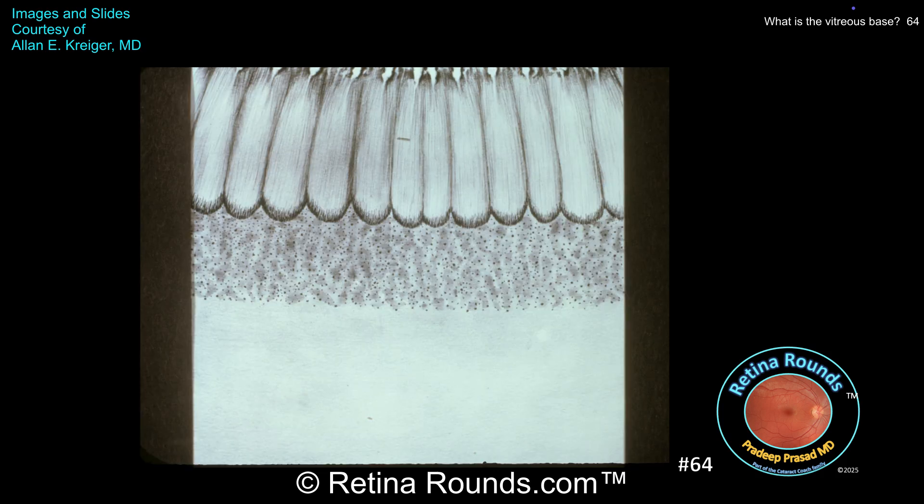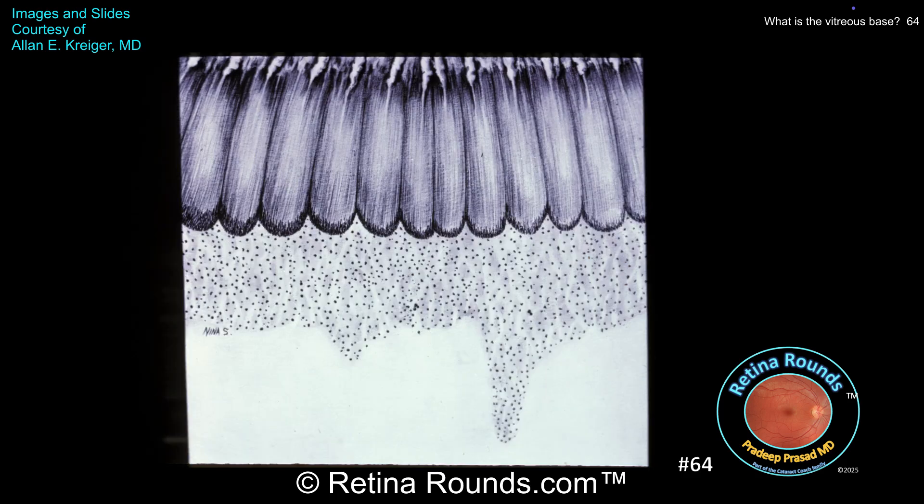Typically, the posterior base has a regular shape that runs roughly parallel to the ora serrata, shown in this diagram as a speckled area posterior to the scalloped edge of the ora serrata. However, the base may also have an irregular border as is shown here. White with and without pressure reflects the visualization of the vitreous base, which is caused by a light reflection from the integrating pattern of collagen fibers to the underlying retina. When you see white with or without pressure, the posterior edge may have a regular or an irregular posterior border, demonstrating the variability in the posterior extension of the vitreous base.